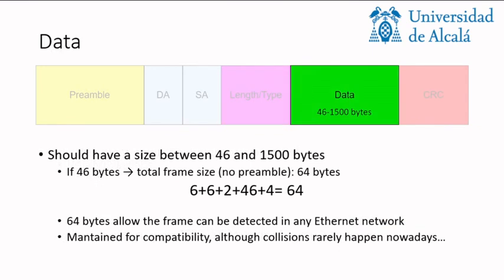Finally, the fourth field is the data from the upper layer, from the network layer. This should have a size between 46 and 1500 bytes. So what happens if we have 46 bytes? The total frame size, remember that this is the size without the preamble, would be 64 bytes. Why do we have this minimum?